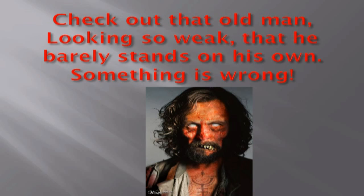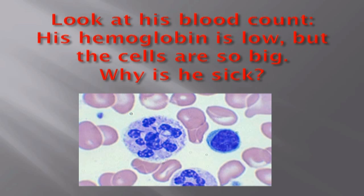Check out that old man, looking so weak that he barely stands on his own. Something is wrong — look at his blood count. His hemoglobin is low, but his cells are so big. Why is he sick?